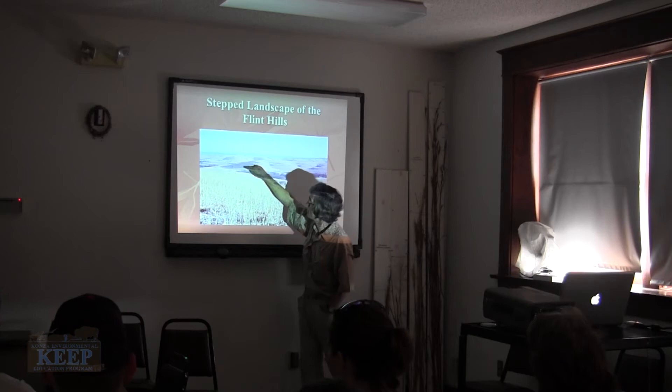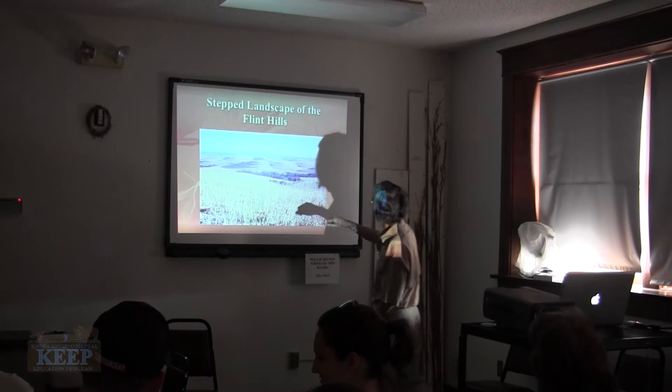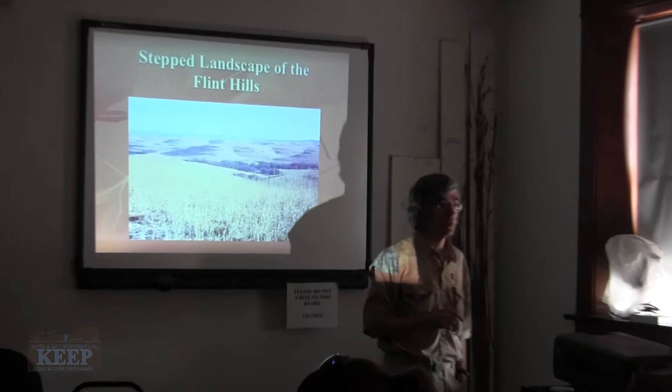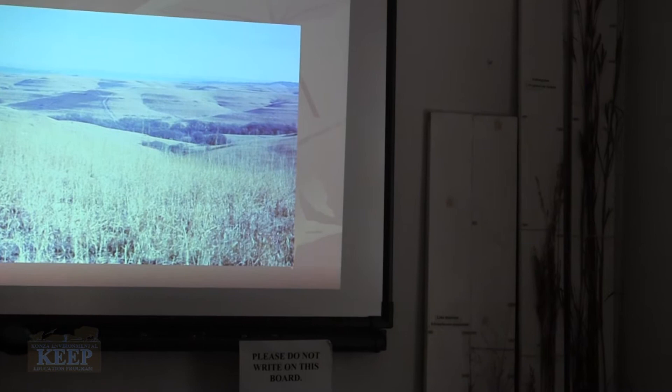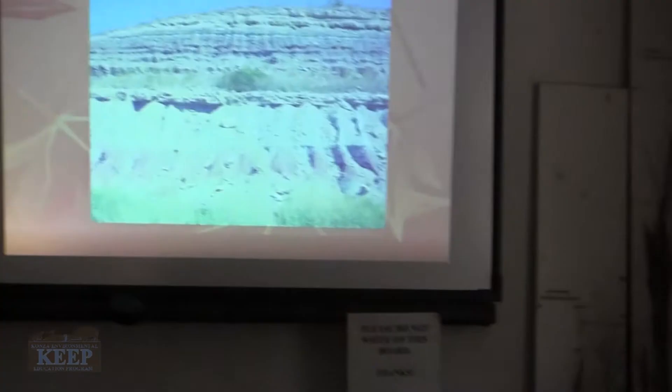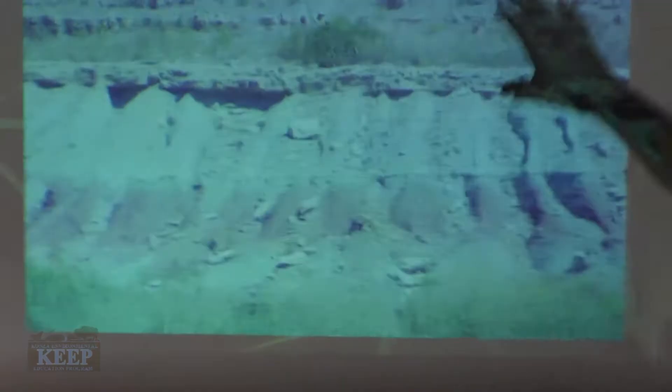Each one of these raised areas, each one of these terraces, represents a limestone layer. In between is where those mud rocks are. So just by looking at the topography, you get a sense of what the geology is. The basic geology of Flint Hills is this alternation between more resistant limestones and colorful mud rocks in between.